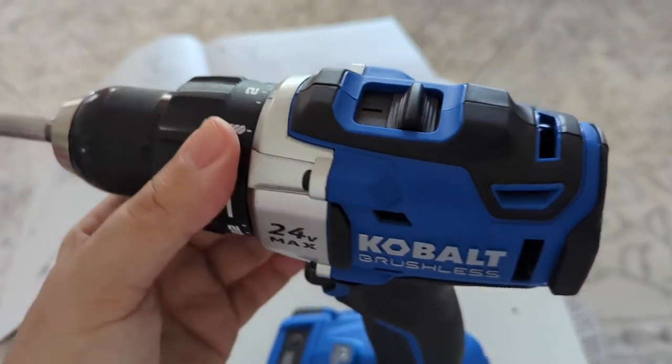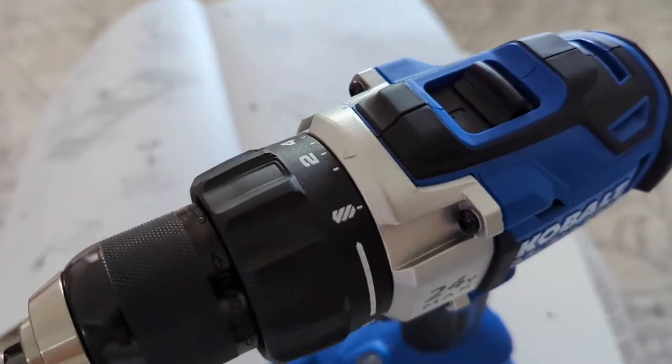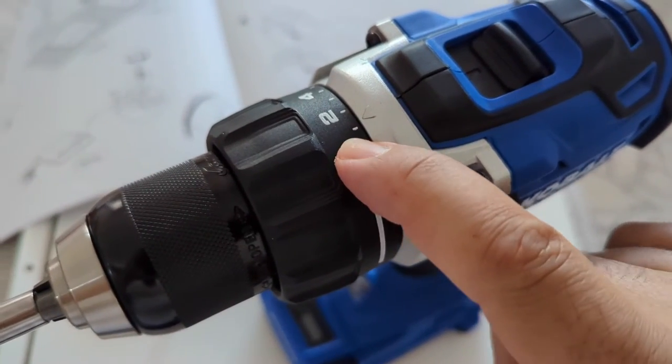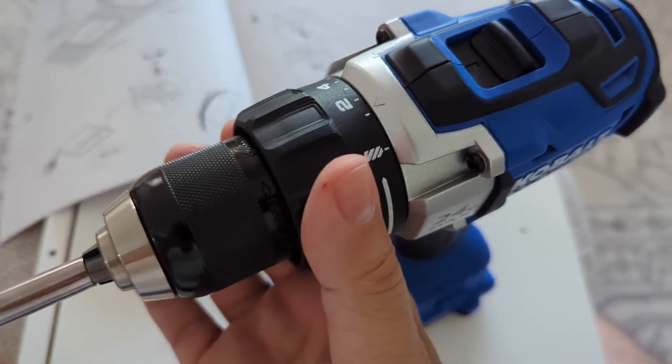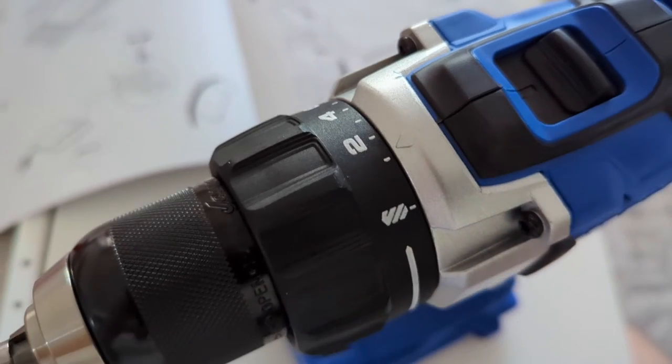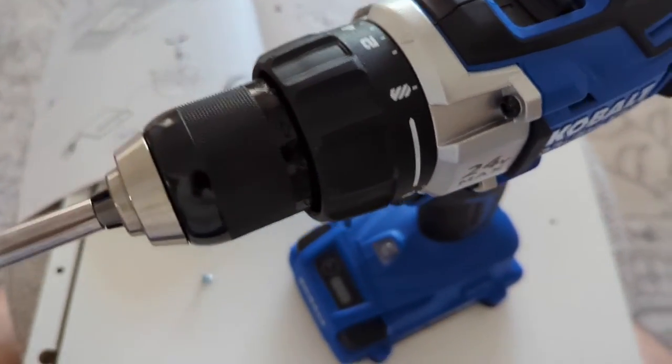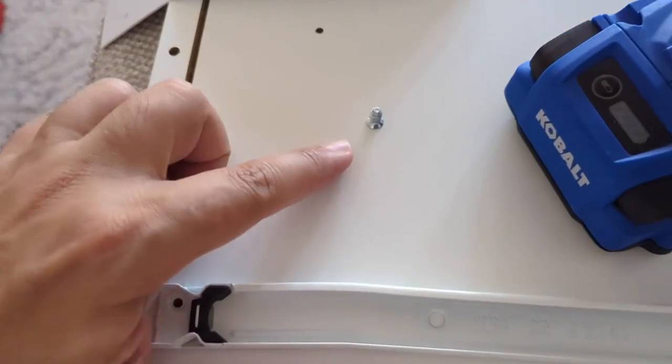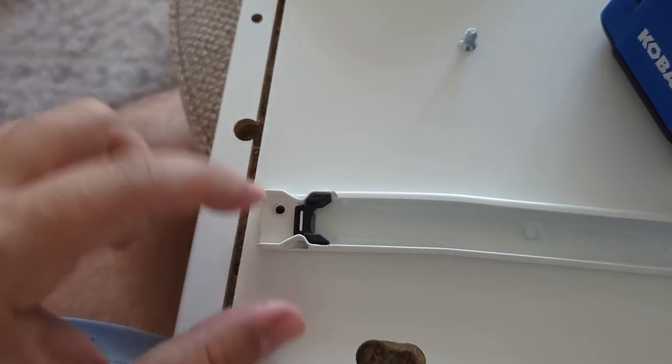There's one setting that you should know how to use. You see these numbers here - basically this is like a clutch. What it does is, for example right now I have it set to one, that's like the lowest strength. So when I put this little screw into this hole, as soon as the screw's all the way in and it starts to give me a little bit of resistance, this is actually going to disengage.